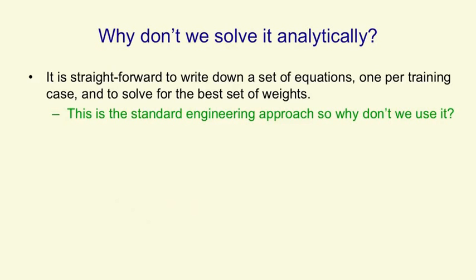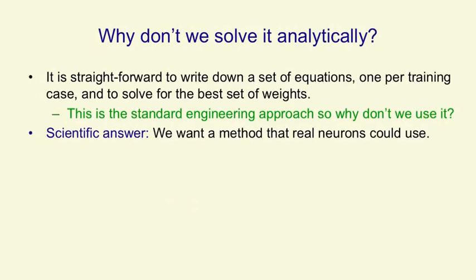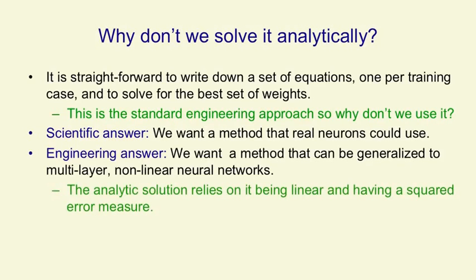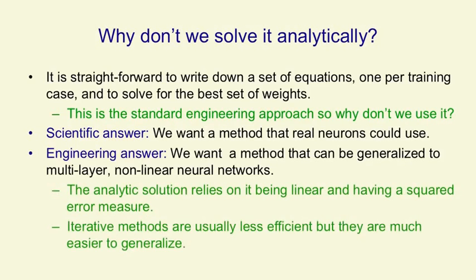The first answer, and the scientific answer, is we'd like to understand what real neurons might be doing, and they're probably not solving a set of equations symbolically. An engineering answer is that we want a method that we can then generalize to multilayer nonlinear networks. The analytic solution relies on it being linear and having a squared error measure. An iterative method, which we're going to see next, is usually less efficient, but much easier to generalize to more complex systems.